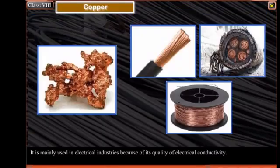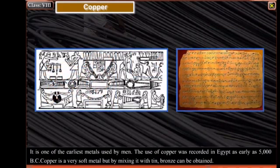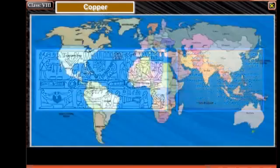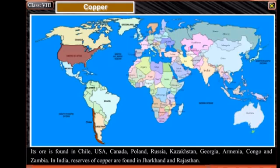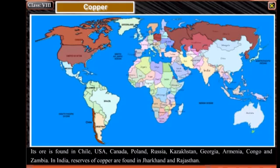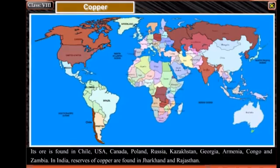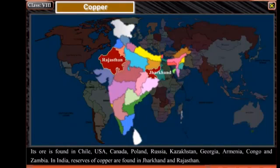Copper is mainly used in electrical industries because of its quality of electrical conductivity. It is one of the earliest metals used by men; the use of copper was recorded in Egypt as early as 5000 BC. Copper is a very soft metal, but by mixing it with tin, bronze can be obtained. Its ore is found in Chile, USA, Canada, Poland, Russia, Kazakhstan, Georgia, Armenia, Congo, and Zambia. In India, reserves of copper are found in Jharkhand and Rajasthan.